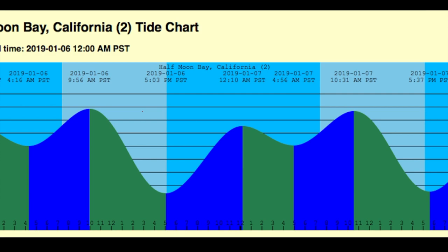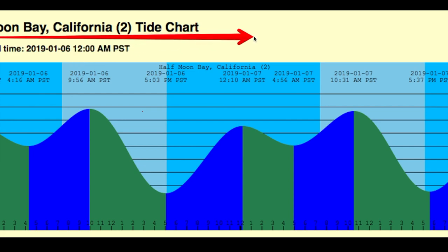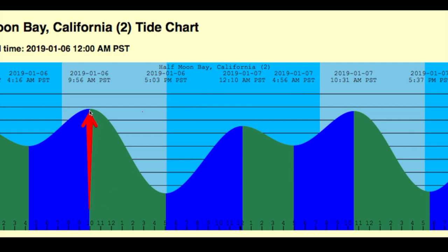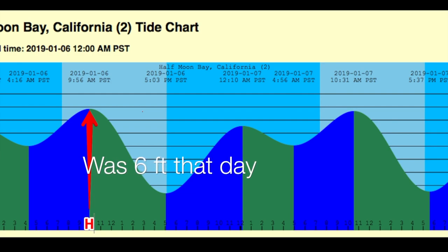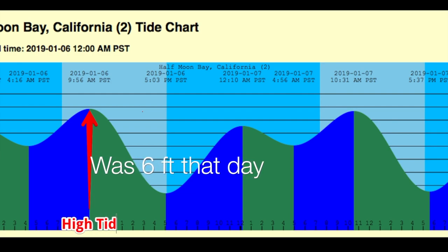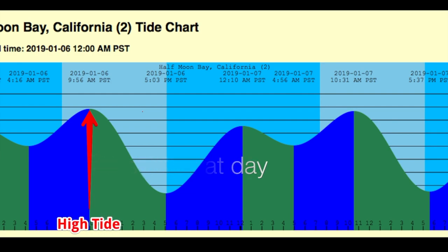Here's a chart of Half Moon Bay. This is just a tide chart you can get online — you just type where you're going and write 'Tide Chart' and it'll give you something roughly like this. Right here, this is the high tide, the highest point of it. This happens twice a day, sometimes three.